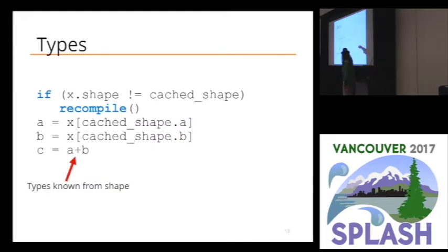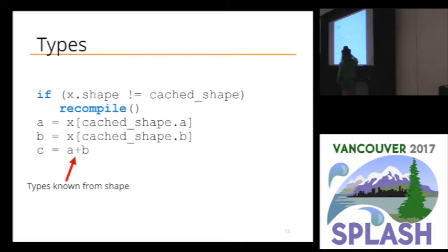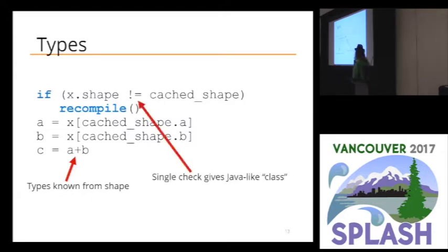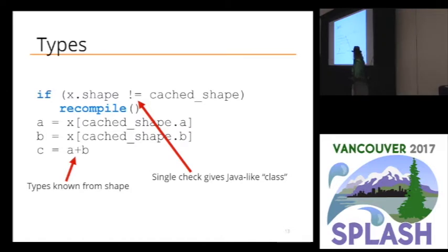So now we do this single check — we know the shape of the object, we know all the types of all the members, we know where to find everything, and all of this is just like it would be in C or Java. That single check gives us pretty much a Java-like class. It's not quite, because it's shallow and not deep, but basically that gives us a Java-like class.